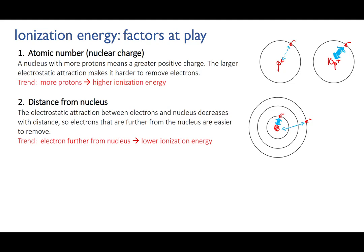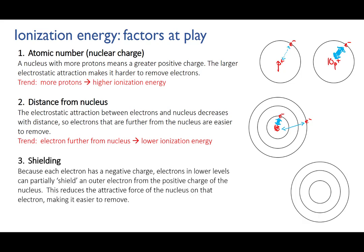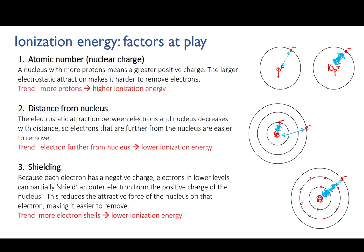Third is the shielding effect. As you now know, an electron in a higher energy level doesn't experience the full attraction of the nucleus, because there's a cloud of electrons in the lower energy levels between it and the nucleus. This shielding effect weakens the attractive force between the nucleus and the electron. So the higher the energy level the electron is in, the lower the ionization energy.